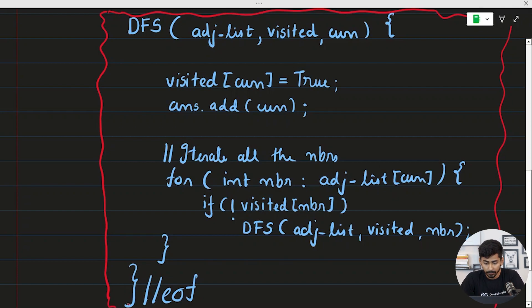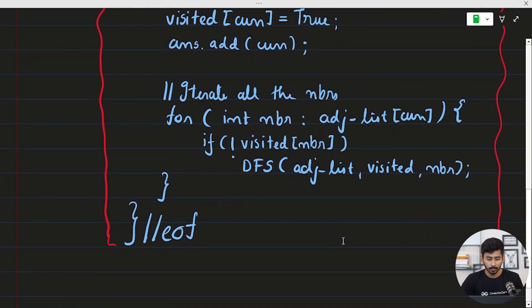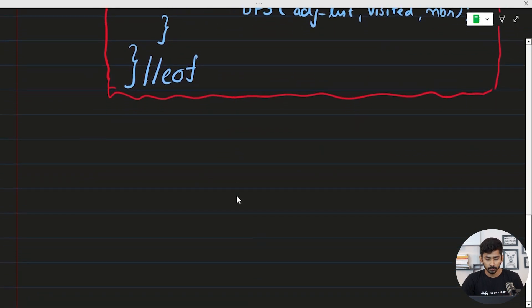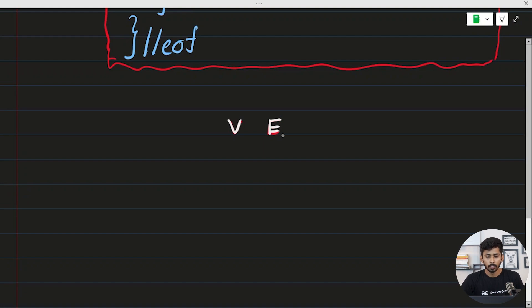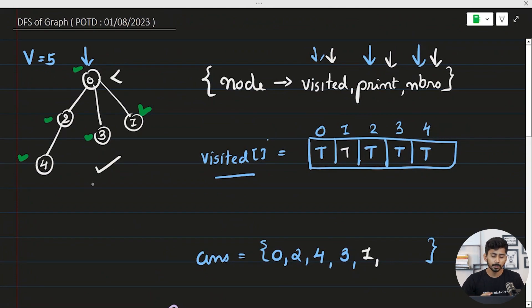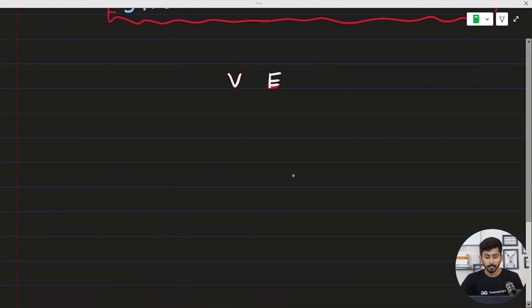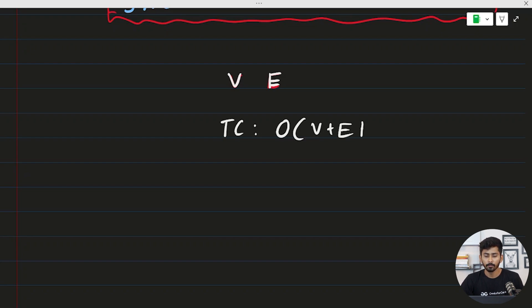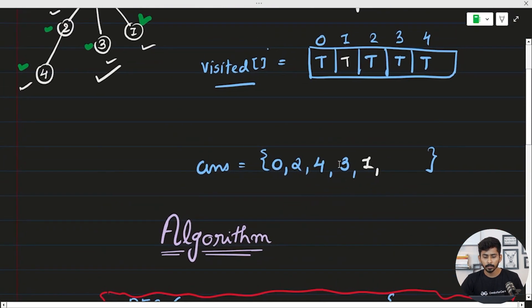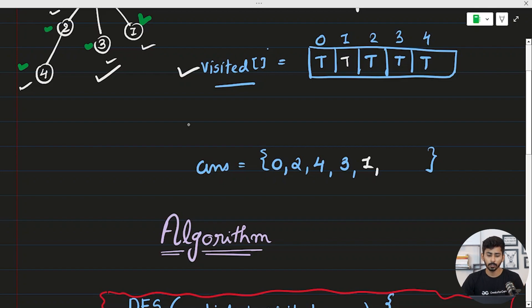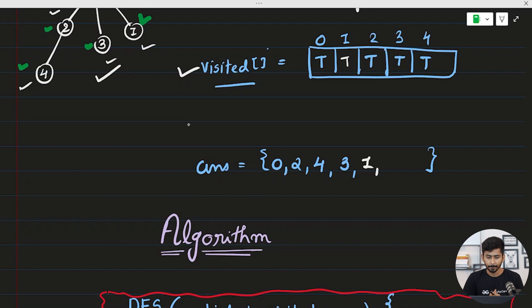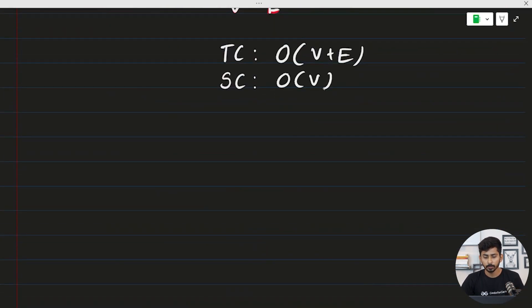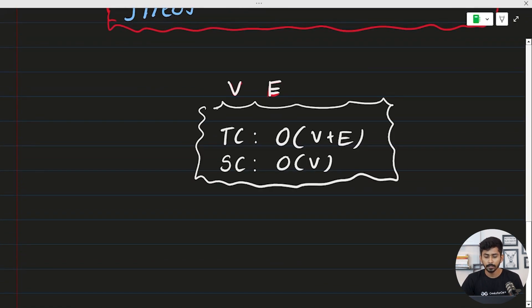What is the time and space complexity of this DFS algorithm? Let V be the number of vertices and E be the number of edges. During DFS we encounter each node and each edge, so the time complexity is O(V + E). The space complexity is O(V), due to the visited array — ignoring the recursive call stack.